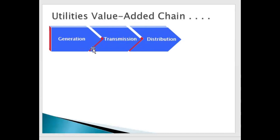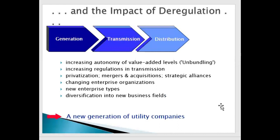A peculiar thing about retailers is that they don't generate and they don't distribute — they only sell energy to consumers. Retailers are very high in number these days because retailer licenses are obtained very easily from deregulated governments. They are responsible for collection and charging of energy: they collect invoice amounts, charge the end customers, and pay back to the distributor. That's how the whole process of unbundling works and the business keeps growing.